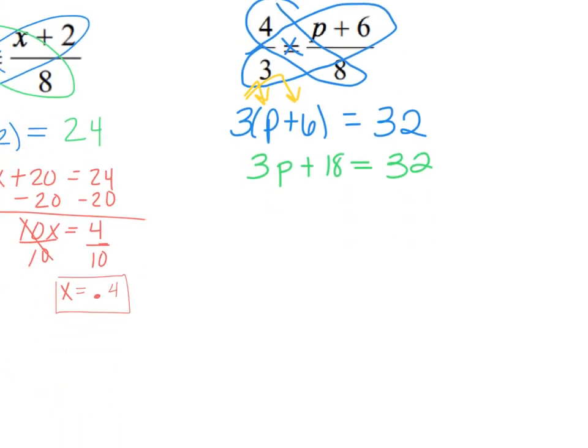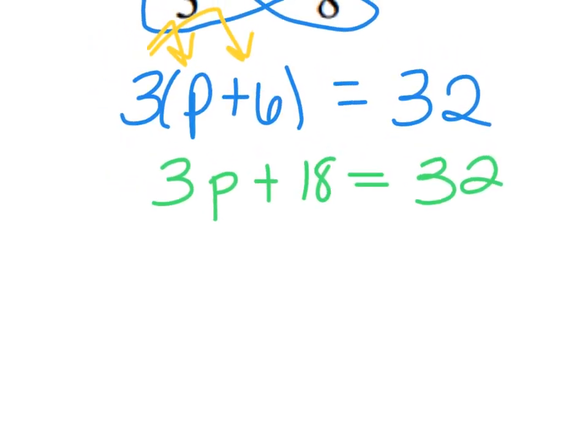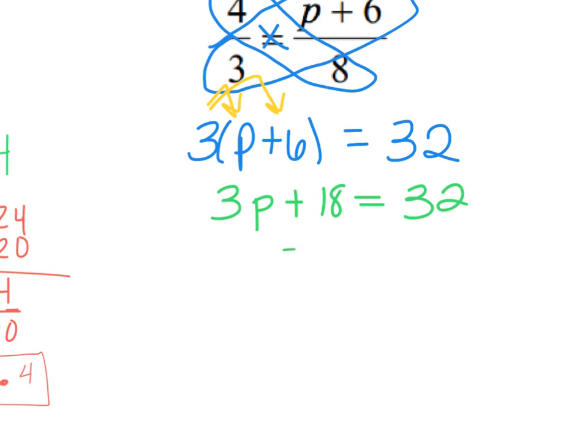My next step, I got to get rid of that 18. This is just a two-step equation. I subtract 18 from both sides. Subtract 18 from both sides. 18's cancel. What's 32 minus 18?